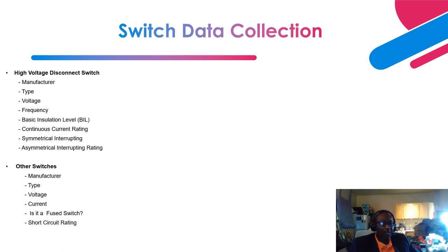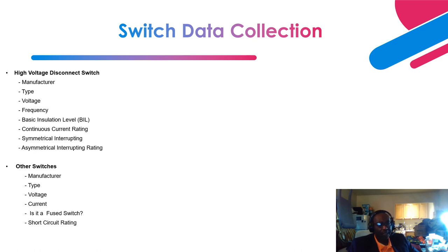For high voltage disconnect switches — which include vertical break, center-pivot, and double break types — you need the manufacturer, type, voltage, frequency, basic insulation level, continuous current rating, symmetrical rating, and asymmetrical rating. For other switches, you need the manufacturer, type, voltage, current, whether it is a field switch, and the short circuit rating.